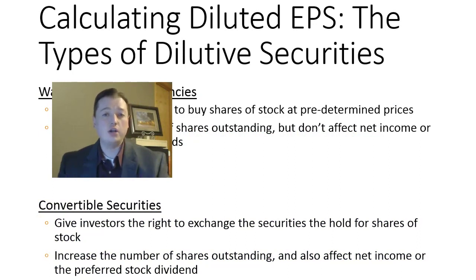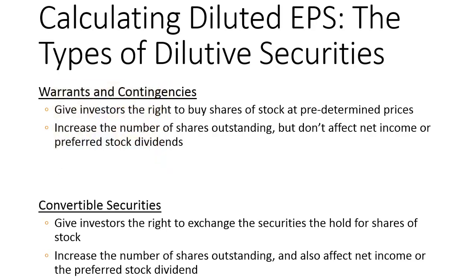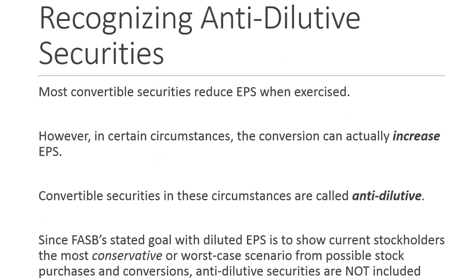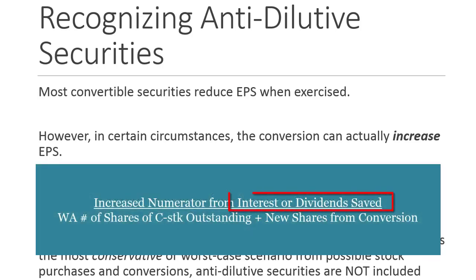Before we go on, it's really important that you understand dilutive securities and these two different categories — it's one of our key concepts. As we just discussed, warrants, stock options, and contingencies always drop EPS. But because of the way a convertible security works, it doesn't always drop EPS.